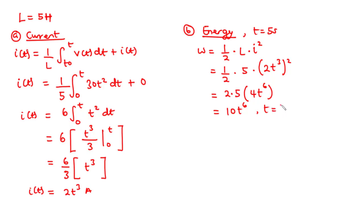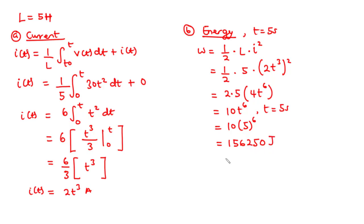Since t equals 5 seconds, we substitute 5 in place of t: w = 10 times 5 to the power of 6, which gives us 156,250 joules. We can express this as 156.25 kilojoules. That is the energy stored in the inductor.